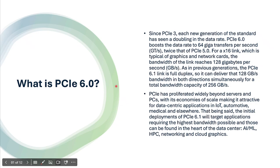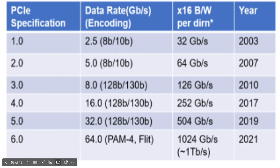Hi everyone, welcome to VLSI Explore with Ravan. Today let's discuss the PCIe Gen 6 introduction. PCIe Gen 6 has a high data rate compared to the previous generations Gen 5 and Gen 3 — it is 64 GT/s.